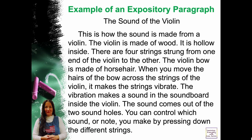Example of an expository paragraph: 'The Sound of the Violin.' 'This is how the sound is made from a violin. The violin is made of wood. It is hollow inside. There are four strings strung from one end of the violin to the other. The violin bow is made of horsehair. When you move the hairs of the bow across the strings of the violin, it makes the strings vibrate. The vibration makes a sound in the soundboard inside the violin. The sound comes out of two sound holes. You can control which sound or note is made by pressing down different strings.'